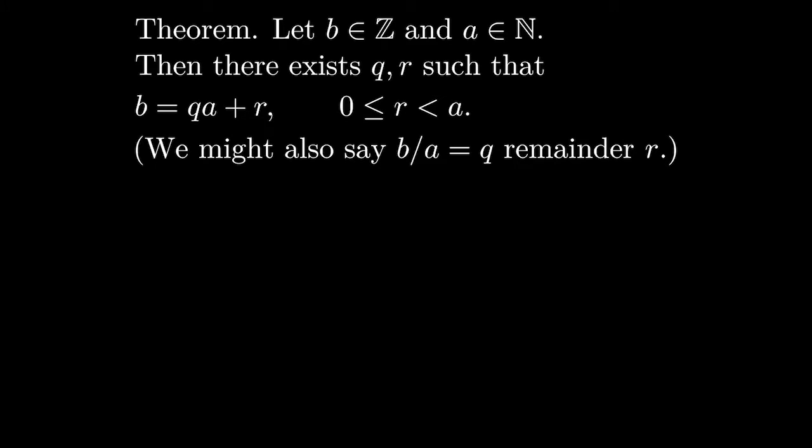b equals q times a plus r, and r is non-negative and strictly less than a. Another way of writing this is to think of it as an integer division, where we say b divided by a equals q remainder r.